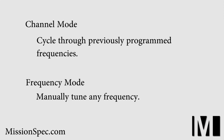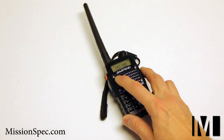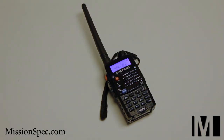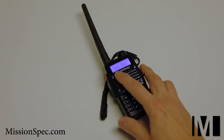This radio has two main modes of operation: channel mode and frequency mode. Channel mode allows you to cycle between different frequencies that have been previously programmed into the radio. Frequency mode allows you to freely tune any frequency you want at any time. We will be using frequency mode for this video. Cycle between the two modes by clicking the orange VM button.